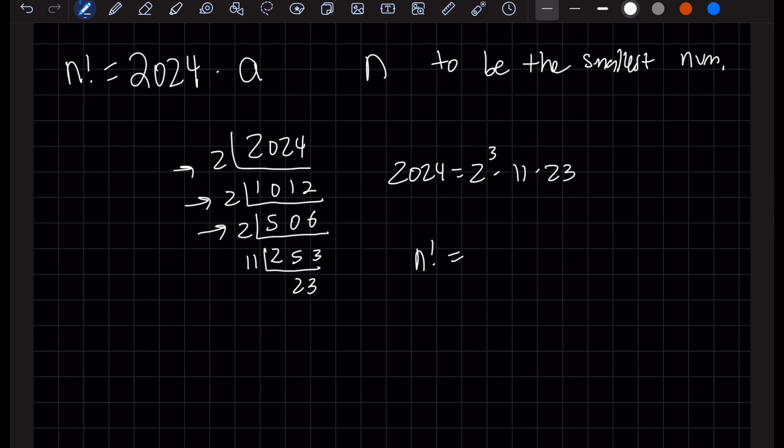And n factorial, what that means is n times n minus 1 times n minus 2, dot dot dot, 2 times 1.